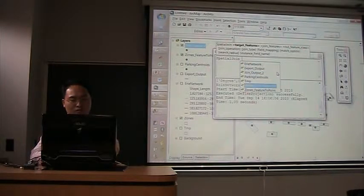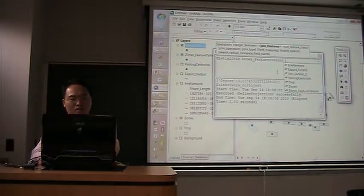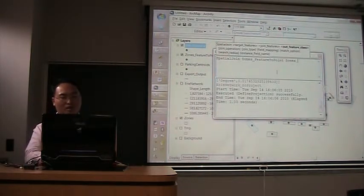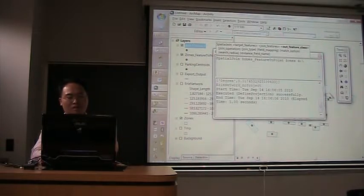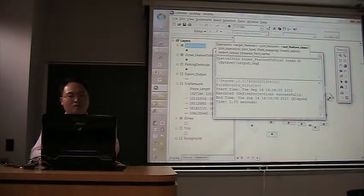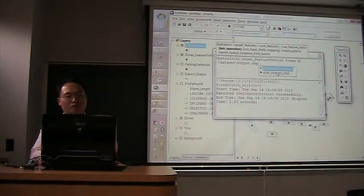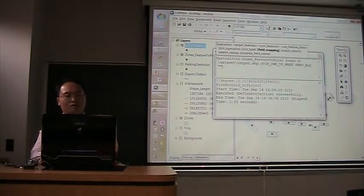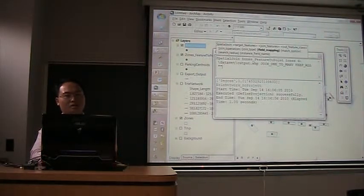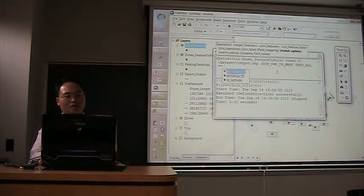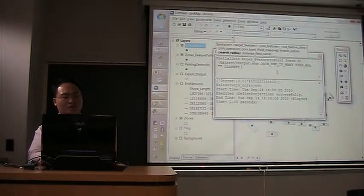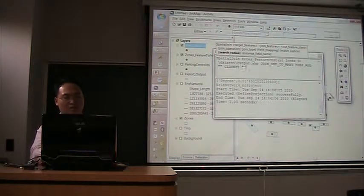Let me put a command here - spatial join, spatial join. Then from which layer to this layer. You see these things are automatically coming out. Output feature layers - maybe drive D slash dataset output.shp. Then we can choose the join operation, join type, field mapping. I just use two quotes to indicate no input. And match option - I can choose closes, intersect, or is within. And search radius, I just use empty.